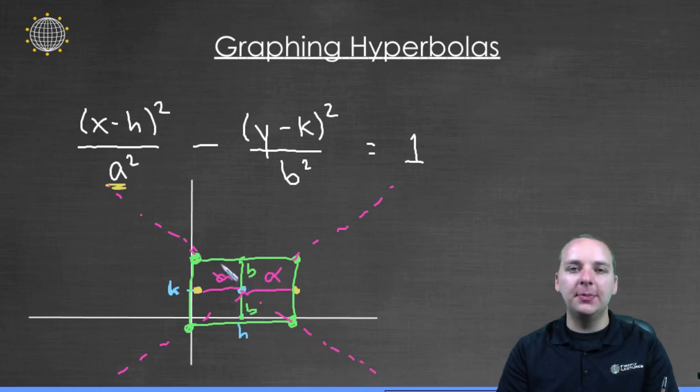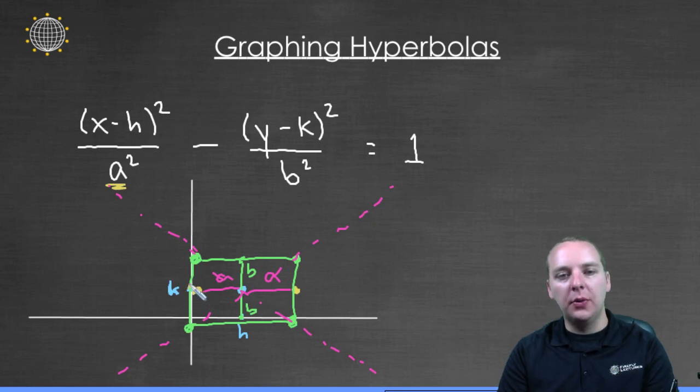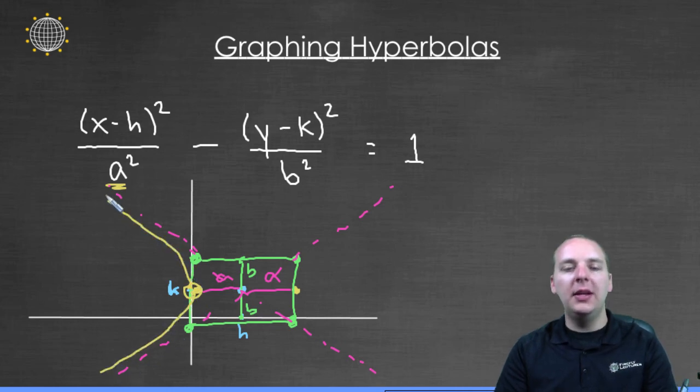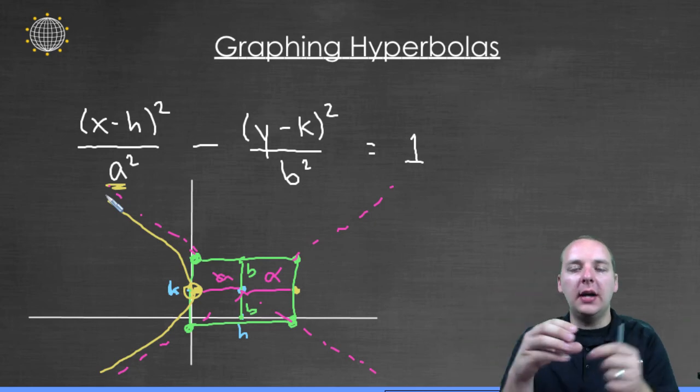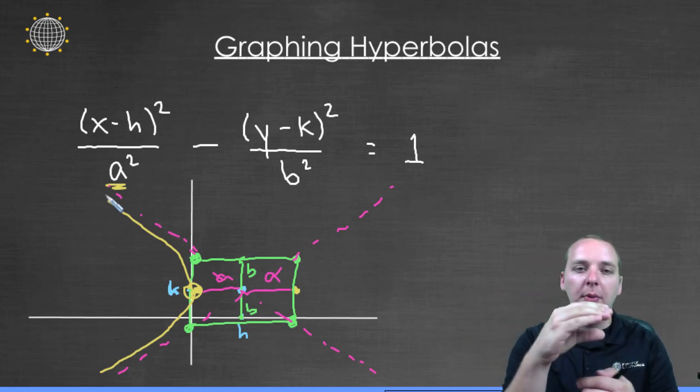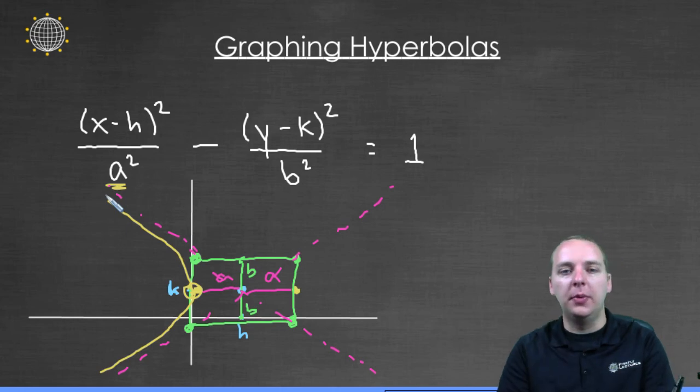Those two guys are the asymptotes of your hyperbola, which means as you graph your hyperbola going through your vertices, it's going to go through your vertex and then hug these asymptotes here. So you can tell, depending on the width and height of the box, it will give you either a very narrow hyperbola or a very wide hyperbola.